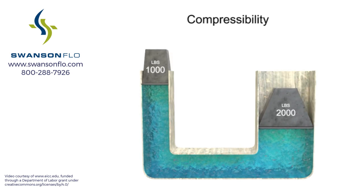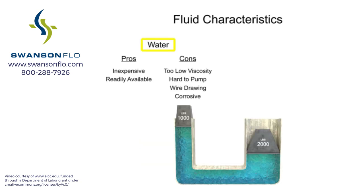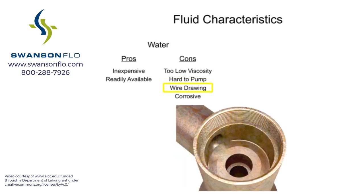Years ago, water was used as the first hydraulic fluid because there was no other liquid available in such large quantities at such a low cost. There are some major drawbacks to using water as a working fluid. Due to its low viscosity, it is difficult to pump. Additionally, the speed at which it flows through the system causes an effect known as wire drawing. Wire drawing occurs when the water flow erodes or scores a pathway in the metal of machinery as it goes around corners and through orifices. It also has corrosive effects on metal machinery.